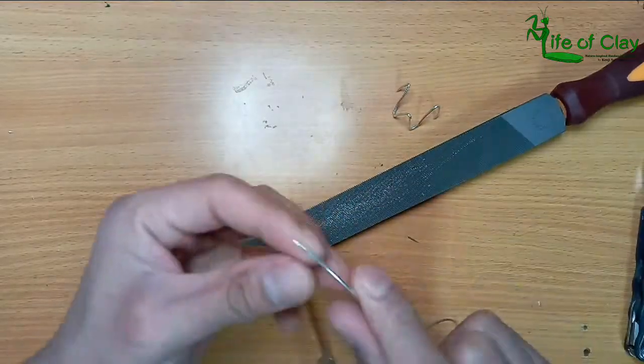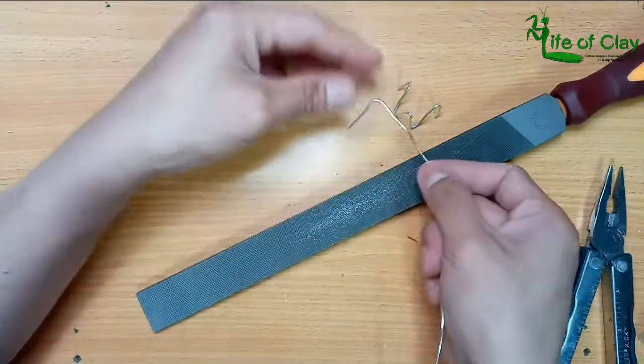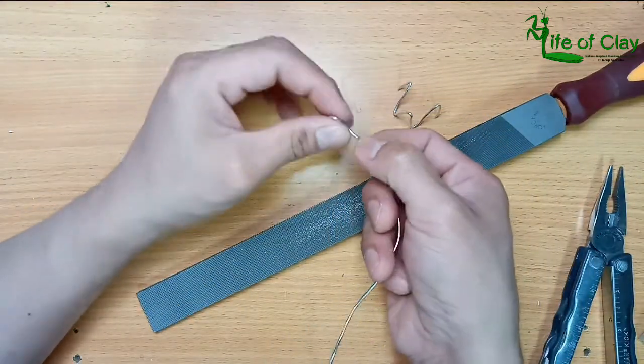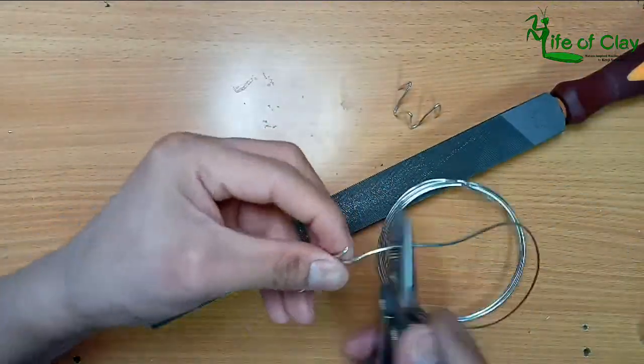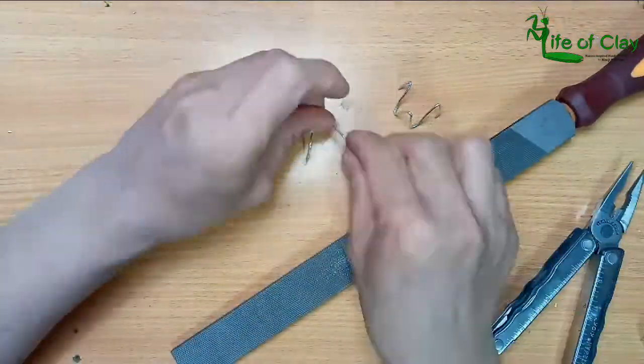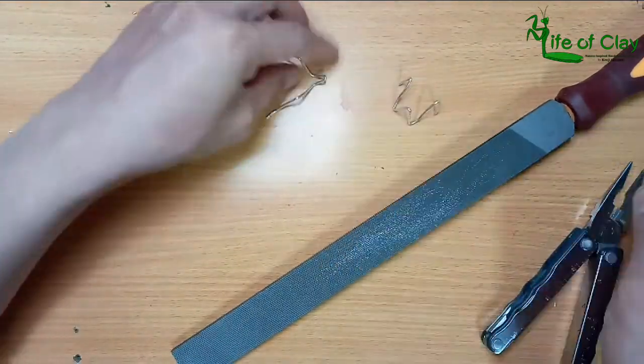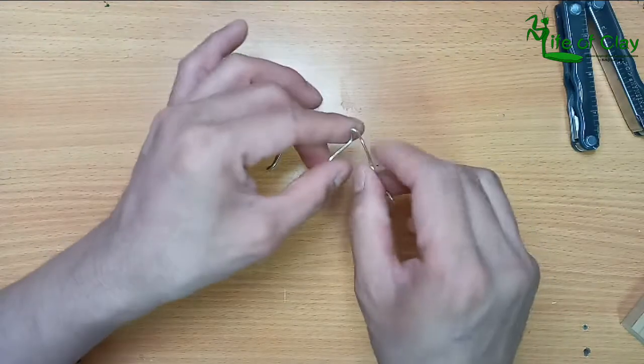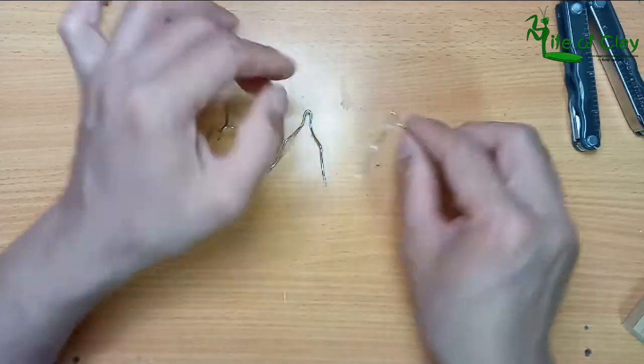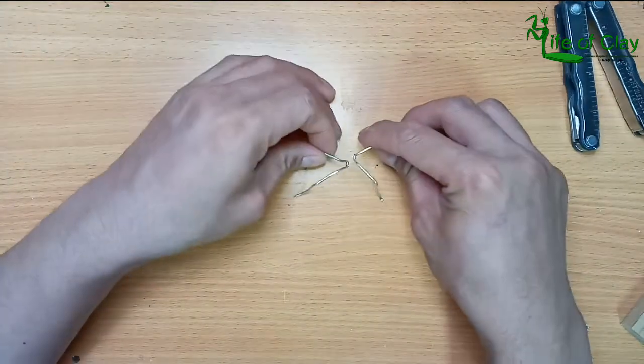And for the legs I also file the tip to make them pointy as well. And now it's time to assemble and I tie them all using a regular yarn.